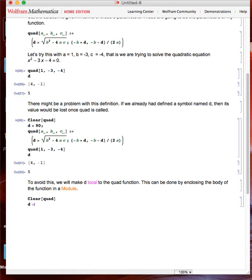I can write the function now a little bit differently. Let's say d equals 85. For example, quad again, my parameters. But now, I'm enclosing the body of the function inside a module. I'm making d a local variable.